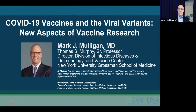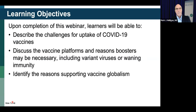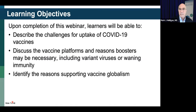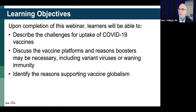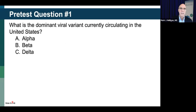COVID-19 vaccines and the viral variants — as each week has passed, this topic has become more timely. We have some learning objectives. We hope that at the end of the webinar you'll be able to describe the challenges for uptake of COVID vaccines, discuss the platforms and the reasons boosters may be necessary — including for variant viruses, waning immunity, or both — and identify reasons for supporting vaccine globalism: the need to vaccinate as many humans on the planet as possible, as quickly as possible.